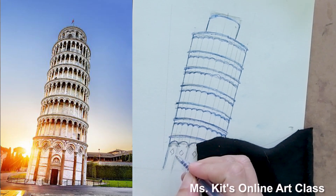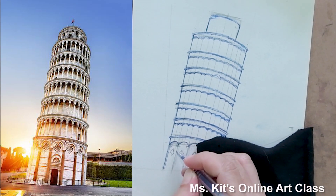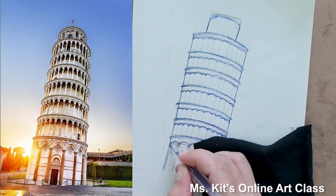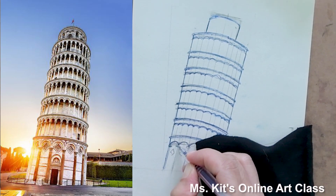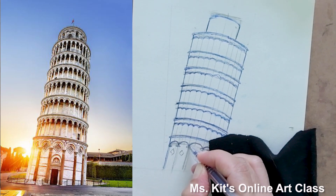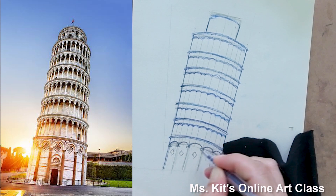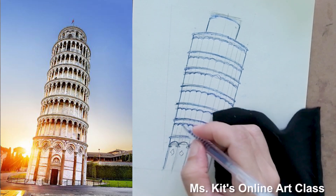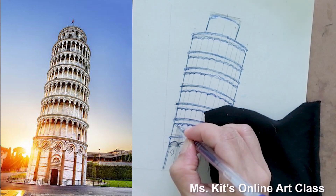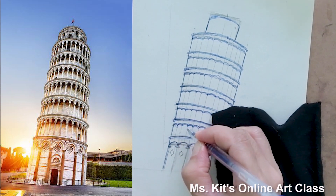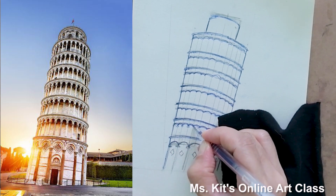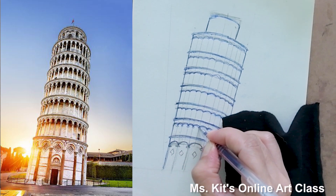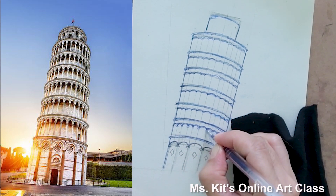Then let us draw the round shapes in between the arches. These shapes represent the head of the column, also known as the capital. The Tower of Pisa has Corinthian column designs.